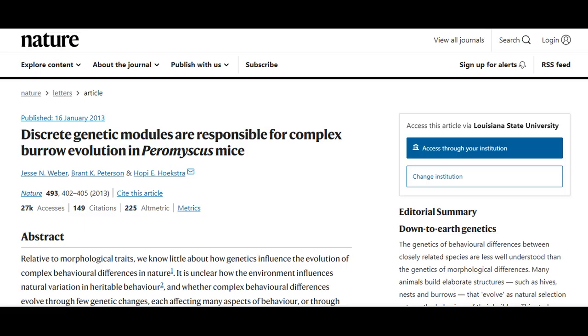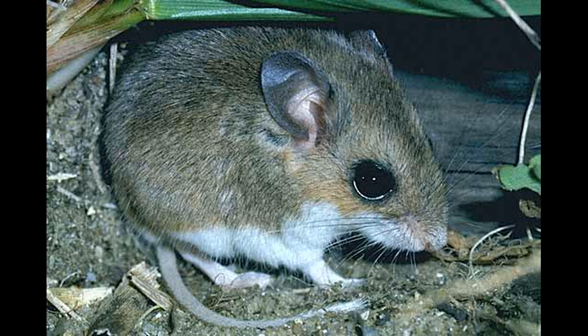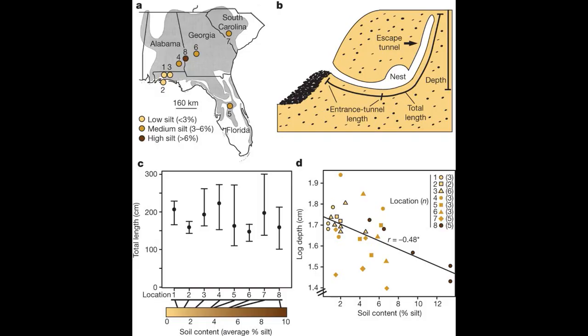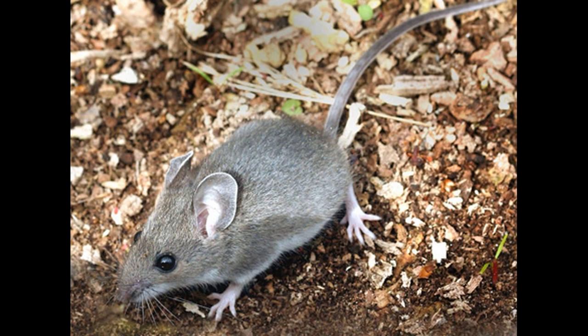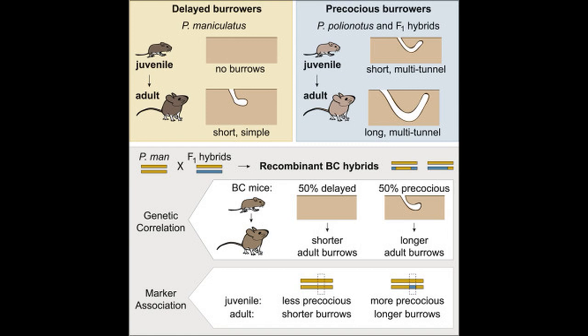But niche construction or extended phenotypes don't necessarily have to involve parasites controlling their hosts. A fascinating 2013 study investigated the genetic underpinnings of burrowing behavior in oldfield mice. Oldfield mice are open field specialists restricted to the southeastern United States, and they build burrows where a long entrance leads to a nest cavity, which then leads to another tunnel that terminates just below the soil surface that functions as an escape hatch. Sister to oldfield mice is the deer mouse, Peromyscus maniculatus, which can be found across fields and forests in North America. Deer mice, by contrast, build small, single-tunnel burrows, so researchers hybridized oldfield and deer mice to understand the genetic component of their burrowing behavior.